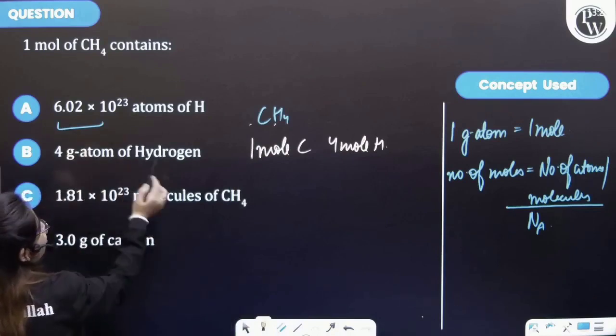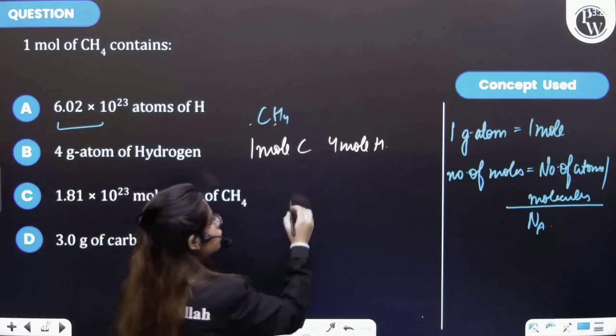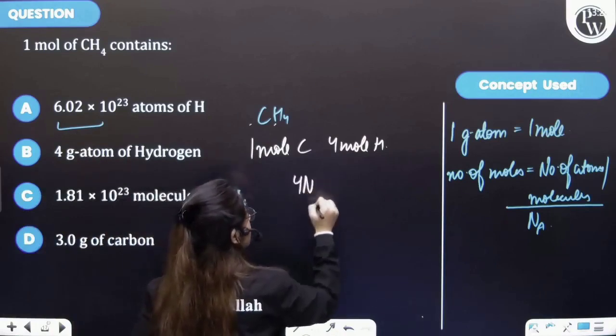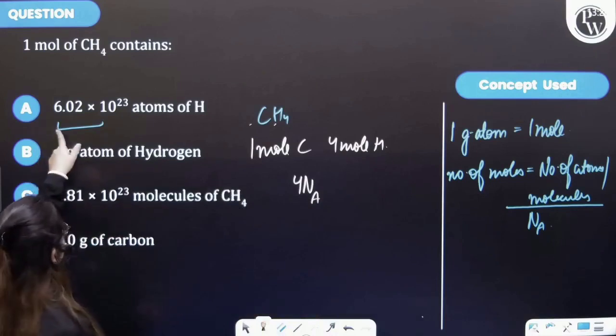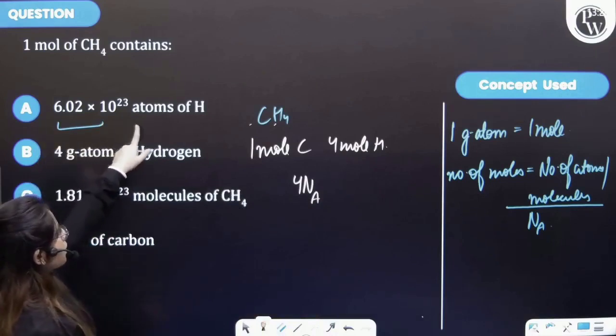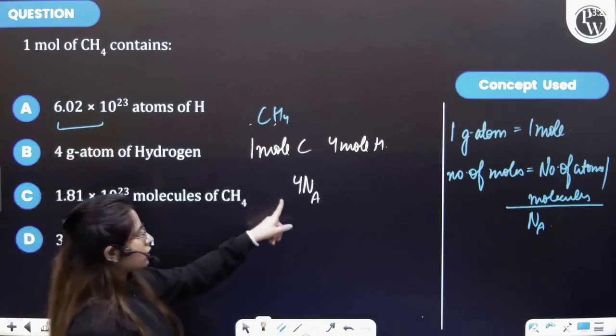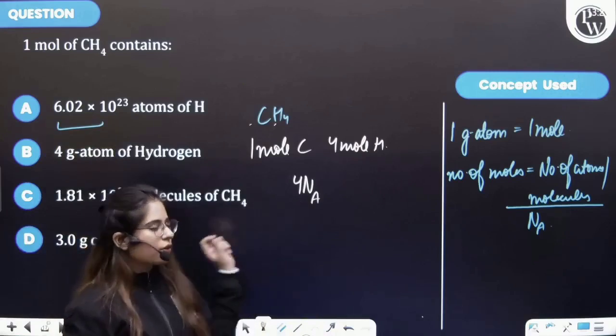So four moles of hydrogen will be having atoms equal to four Na. So the first statement is incorrect - this corresponds to only Na but actually it should be four Na atoms of hydrogen.